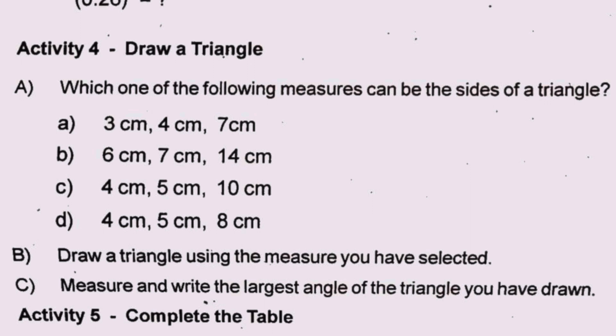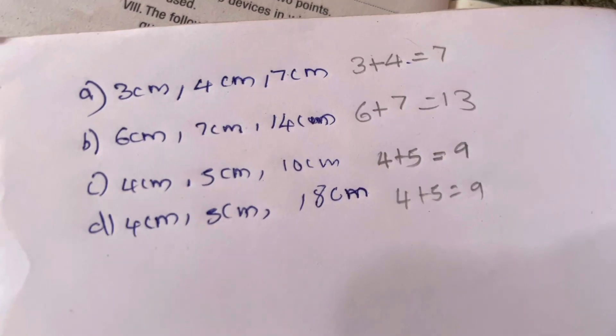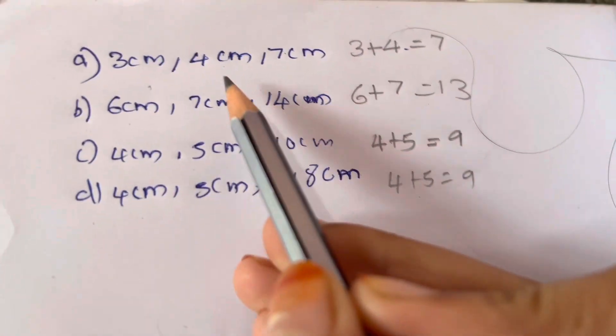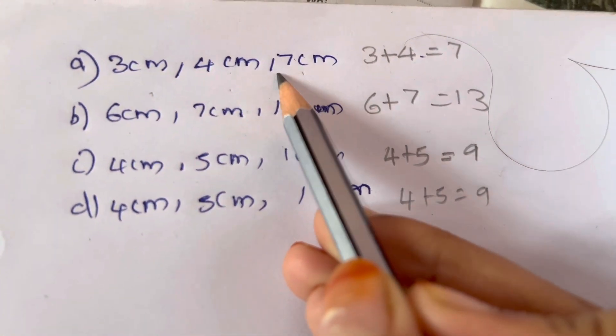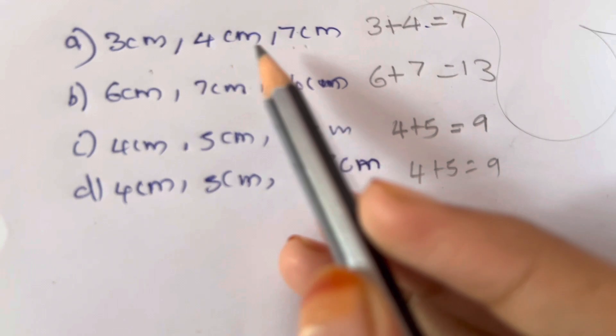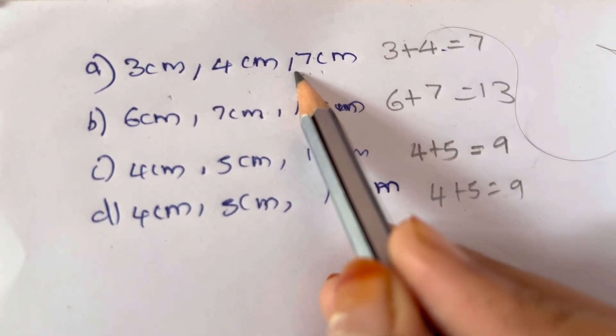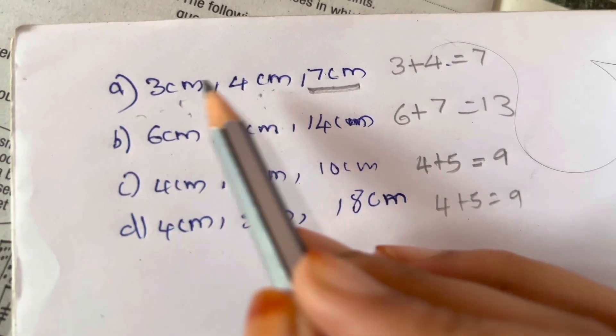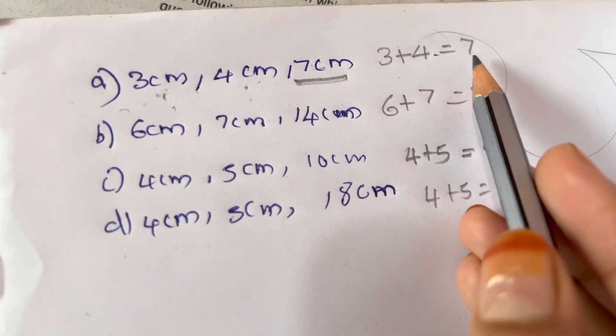Activity 4: Draw a Triangle. Which one of the following measures can be the sides of a triangle? There are 4 options here. This is 3 cm, 4 cm, 7 cm. We add these numbers, so we can check if they form a triangle.